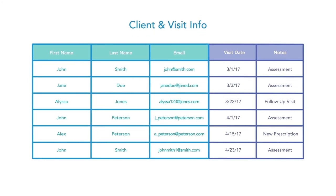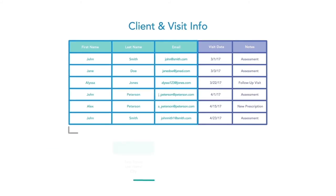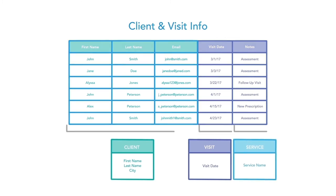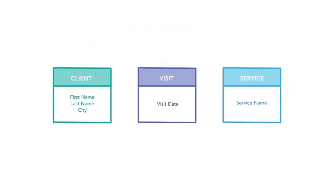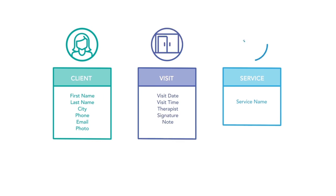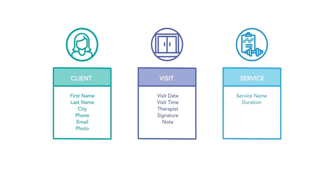Another way to figure out tables for your custom app is to review any spreadsheets used to currently manage your data. This is also a great way to start figuring out what fields you'll need to track in your custom app. Your spreadsheet may not have all the information you plan on tracking. Think about other fields you may need to add, like a photo of your client, the time of a client's visit, and the duration of the services provided.